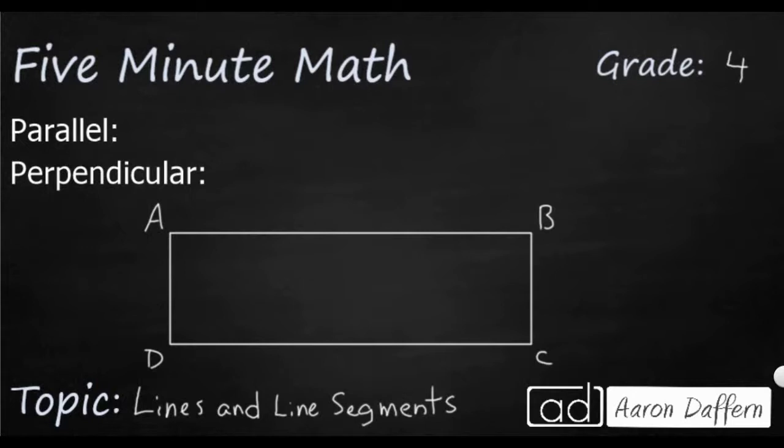So parallel lines are two lines, or they could be line segments, that never meet. So if we were to look at, let's say, we've got line segment AB. So I'm going to show it like this. AB is my line segment. If you notice AB, I'm going to put a little chevron on there. That shows that it is parallel to line segment DC. Even though they're line segments, if you were to extend AB forever and DC forever, they would never meet.